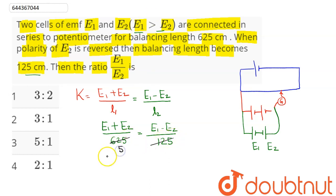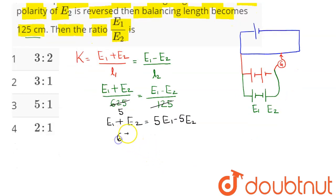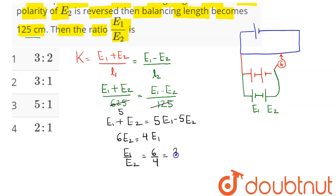This gives us e1 plus e2 equals 5 times (e1 minus e2), which simplifies to e1 plus e2 equals 5e1 minus 5e2. Therefore 6e2 equals 4e1, and the ratio e1 to e2 comes out to be 6 to 4, that is 3 to 2. Option number 1, 3 ratio 2, is the correct answer.